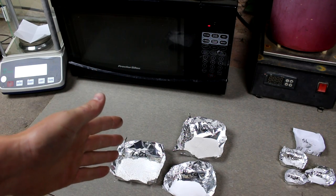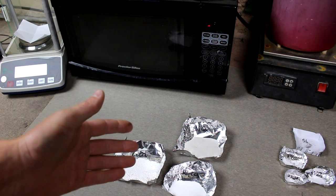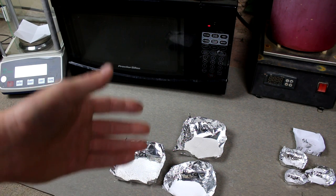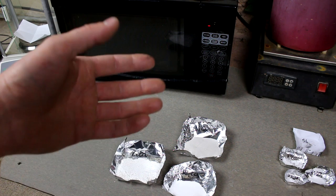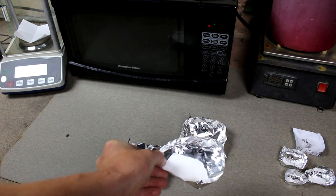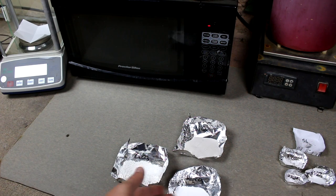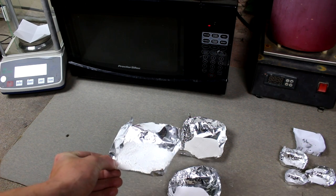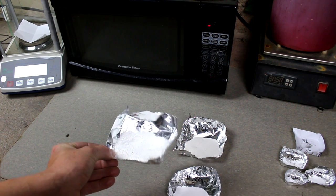So today I'm going to be making some soda lime glass, which is of course the most common glass that you'd encounter in everyday life in things such as window panes and glass bottles. It is called soda lime glass because two of the main ingredients are sodium carbonate, or soda ash, and calcium carbonate, which when you heat it, it forms lime.